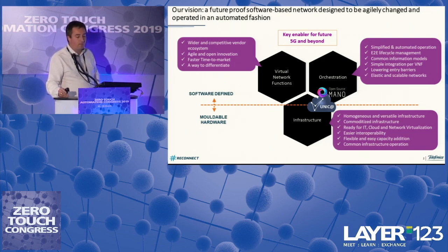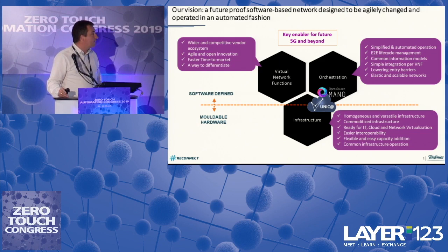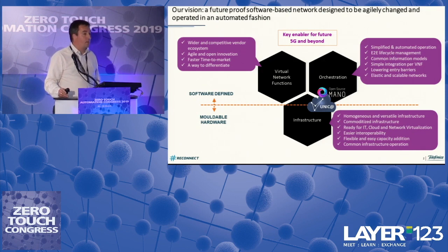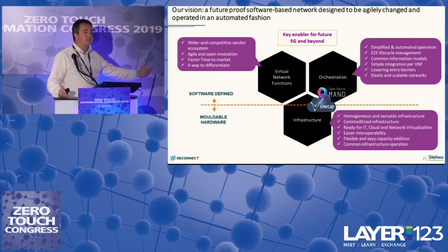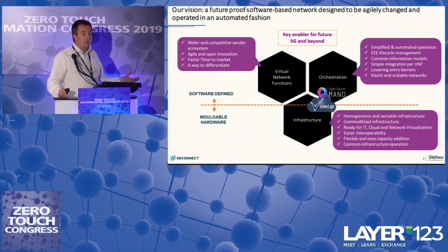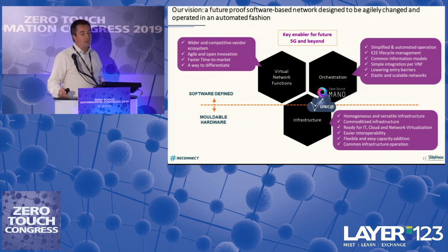What we are expecting from this orchestration is to make our lives easier. It's about having an end-to-end lifecycle management. When we talk about end-to-end orchestration, we mean this end-to-end lifecycle management — it's not only about automating the creation of the network or the first VNFs. It's also about how to automate the configuration of all of them, the scale procedures, the upgrades. It's about automating all aspects of the lifecycle of our networks.